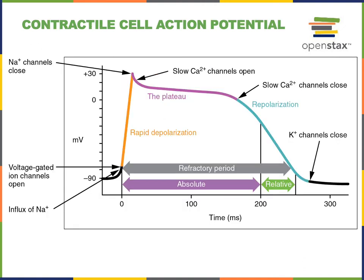Here we see a graph of the contractile cell action potential. When the membrane is depolarized to threshold for opening of voltage-gated sodium channels, sodium influx causes rapid depolarization during the rising phase of the contractile cell action potential, shown in the orange line.